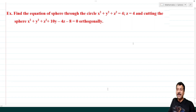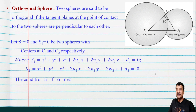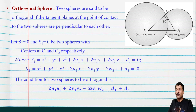What is an orthogonal sphere? The condition of orthogonal spheres is 2u₁u₂ + 2v₁v₂ + 2w₁w₂ = d₁ + d₂. Note the coefficients: find u₁, v₁, w₁ for the first sphere, u₂, v₂, w₂ for the second sphere, and d₁, d₂ as the constant terms.